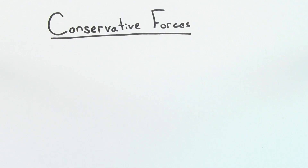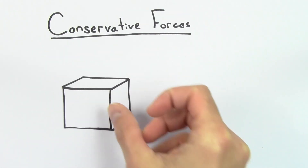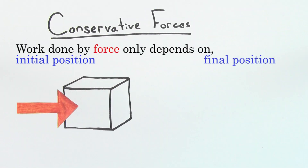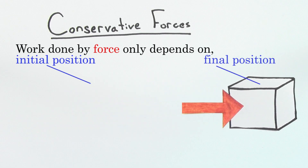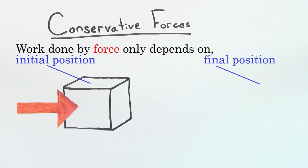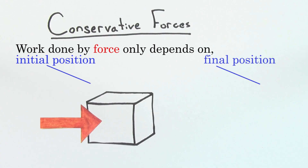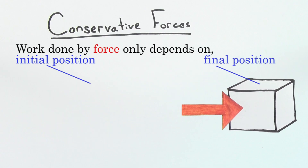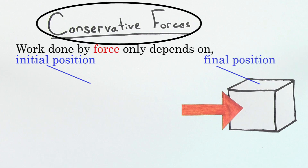What's a conservative force? Conservative forces are any force wherein the work done by that force on an object only depends on the initial and final positions of the object. In other words, the work done by a conservative force on a mass does not depend on the path taken by that mass. If the work done by a force follows this rule, then we call it a conservative force.